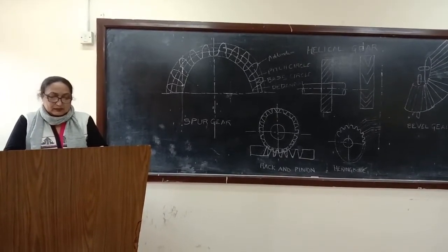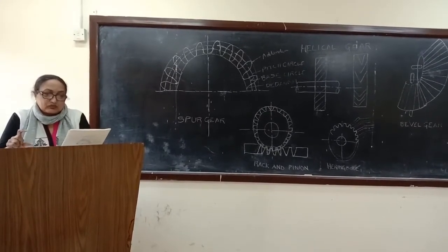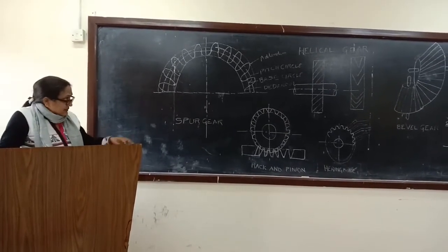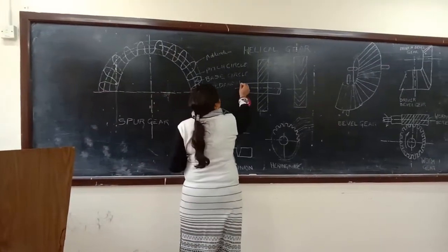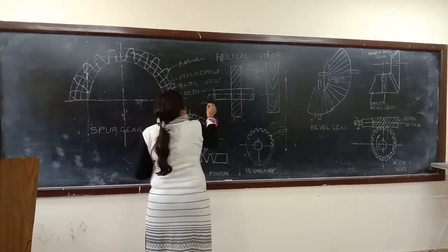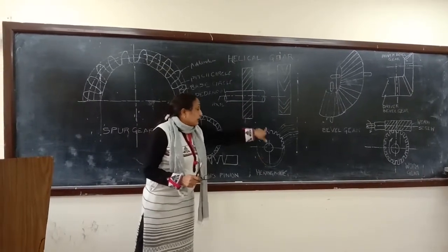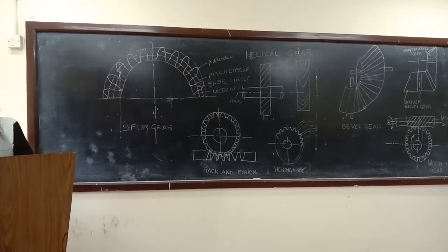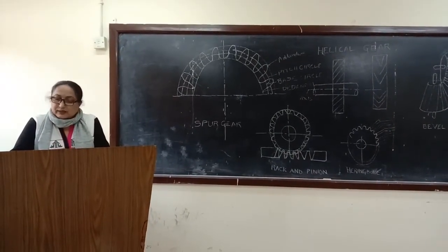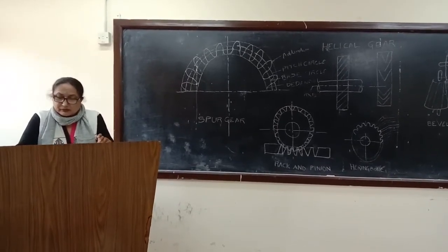Next is helical gears. Spur gear produces noise, but helical gears produce less noise. Helical gears have teeth inclined at an angle. The teeth are inclined at angle. Used in parallel shafts for power transmission.